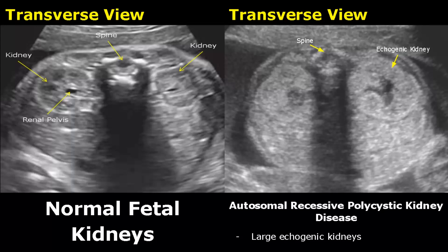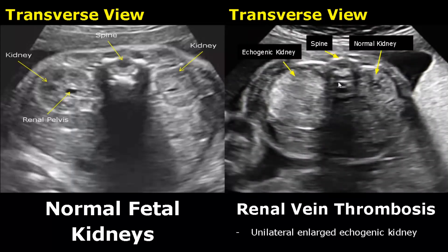Renal vein thrombosis is difficult to diagnose on ultrasound, but one of its features is an enlarged echogenic kidney. It usually affects only one kidney.